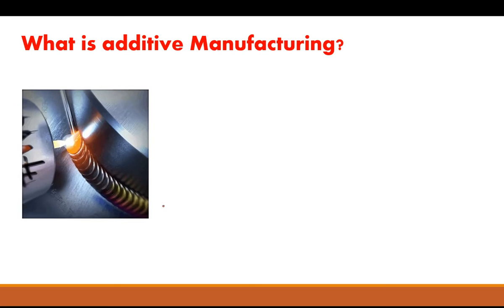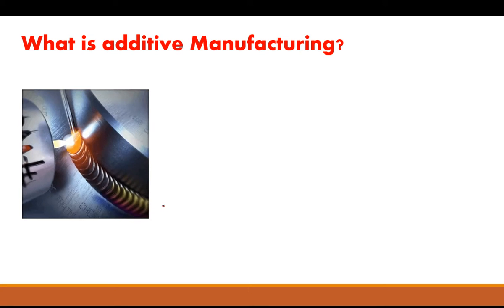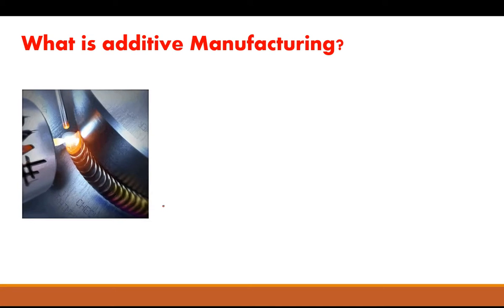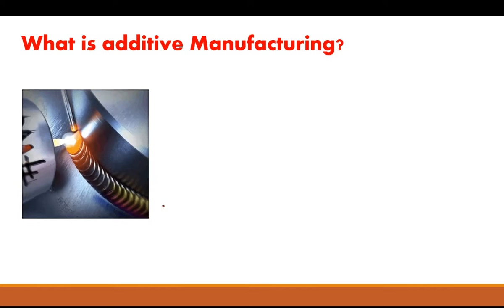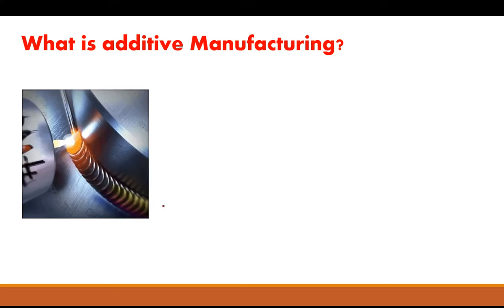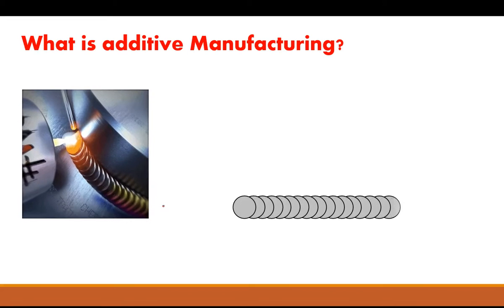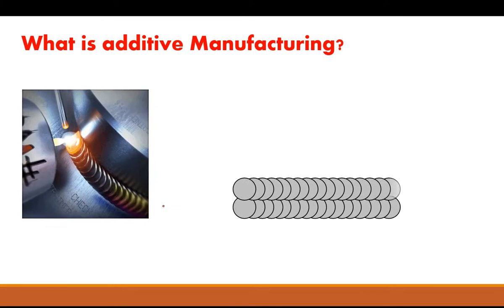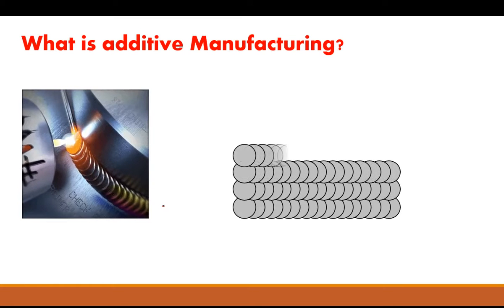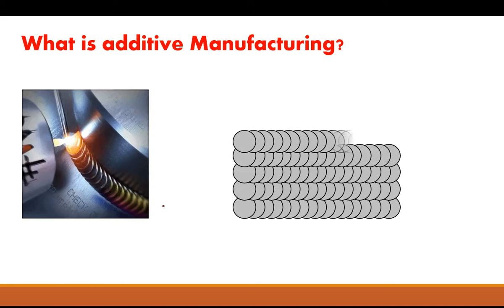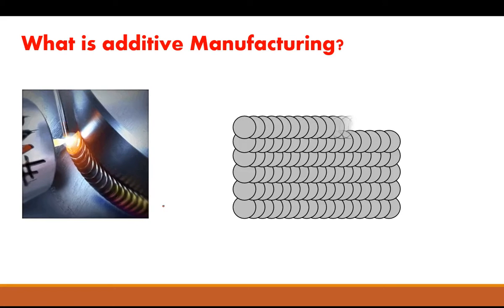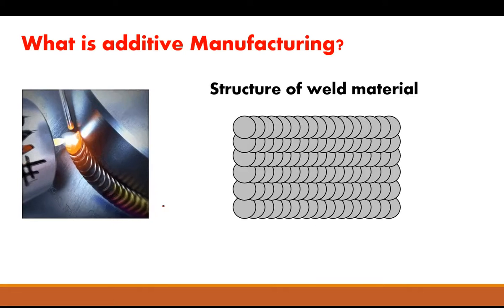What is additive manufacturing? Let's give this a little more detail. What you see in that GIF on the left is a welding process — just a joining process. You take a consumable rod, bring it to a molten state, and create a weld joint. Now imagine you take that same weld joint and keep building on top of itself — one bead of weld on top of another. What you'd end up with is a structure made of nothing but weld. That is the fundamental thought process behind 3D printing or additive manufacturing.